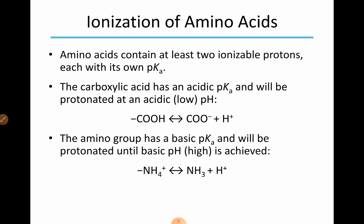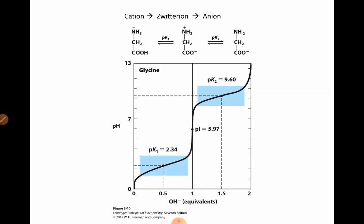Amino acids contain at least two ionizable protons, each with its own pKa. The carboxylic acid has a pKa and will be protonated at acidic, low pH. The amino group has a basic pKa and will be protonated until a basic, high pH is achieved. This reaction shows the transition from a cation to a zwitterion and then to an anion as the pKa varies and the charge also varies.